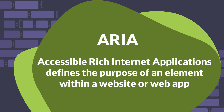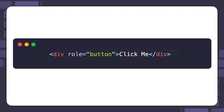An ARIA role defines the purpose of an element within a website or web app. Here is an example of setting the role to button for a div element. By doing this, you're indicating to the assistive technology that the element is a button. Roles do not provide any functionality, however. Merely giving this div a role of button will not make it act like a button. To make it look and behave like a button, you would need to use CSS and JavaScript to get the desired result.